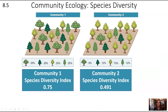Comparing our two communities: community 1 has a species diversity index of 0.75, and community 2 has a species diversity index of 0.491, so community 1 has the greater diversity. As we said at the beginning, this is because there is better evenness — a more equal relative abundance — among the species in community 1.